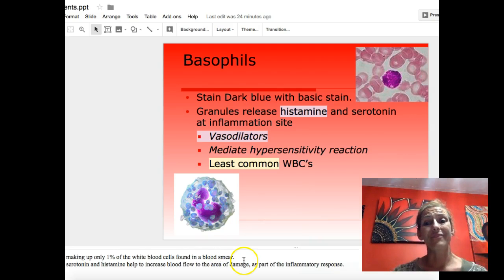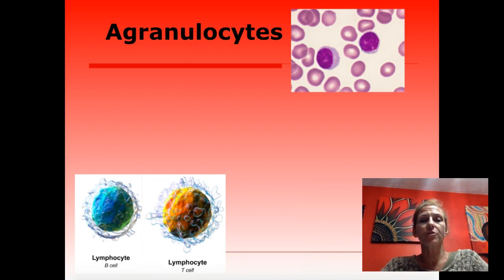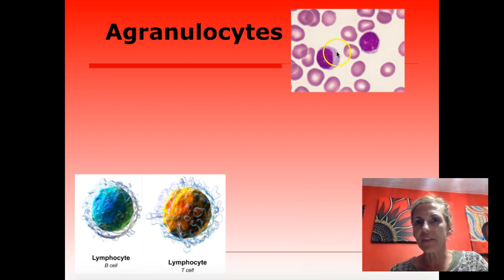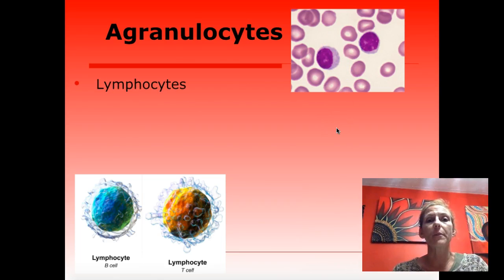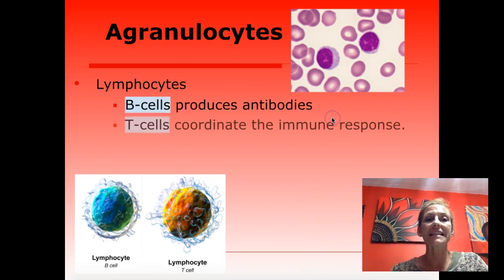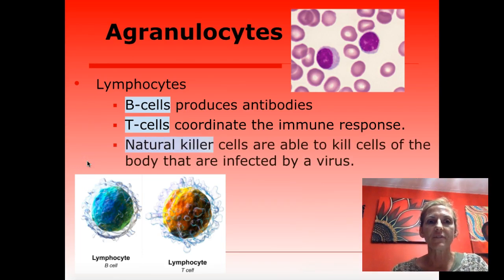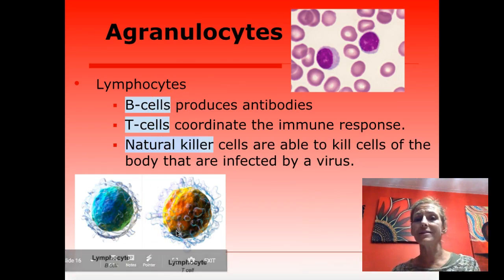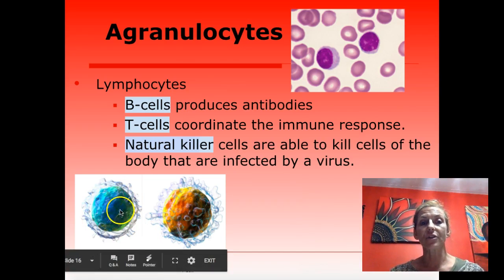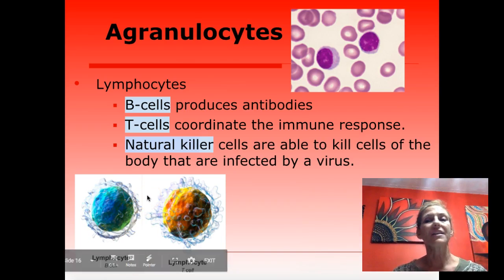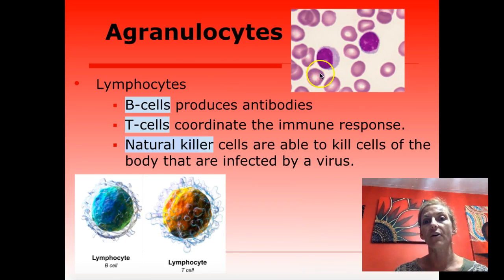Granulocytes have coarse granules; agranulocytes do not. In agranulocytes you see a dark purple nucleus with a clear cytoplasm around it. These are mostly lymphocytes — your second most common white blood cell after neutrophils — and monocytes. Lymphocytes include B cells and T cells. Their nucleus is circular in shape with a very small rim of cytoplasm on the outside. They are smaller than your other white blood cells, which helps identify them.